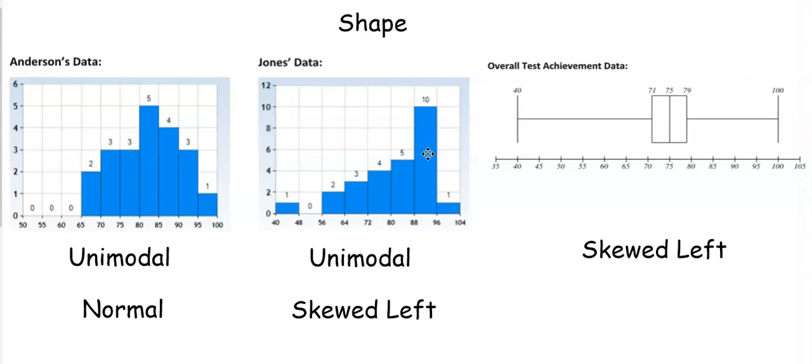Jones's data is unimodal because it has one peak and it is skewed to the left. Skewed to the left is showing us that we have most of our data over here to the right but we do have this tail end over here to the left. In the box plot we can tell that this is skewed to the left because if we look at the length of these two whiskers the distance from 40 to 71 is greater than the distance from 79 to 100 so we have a long tail to the left so it is skewed to the left.